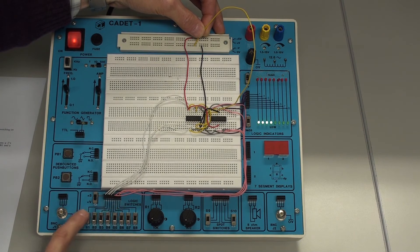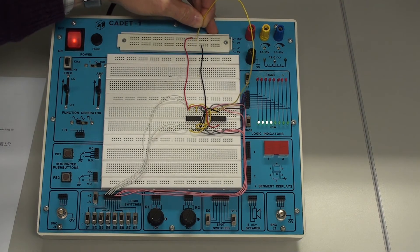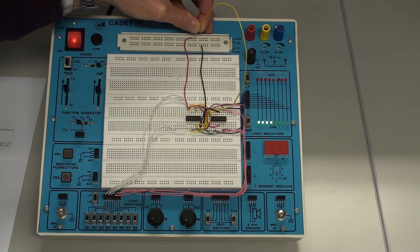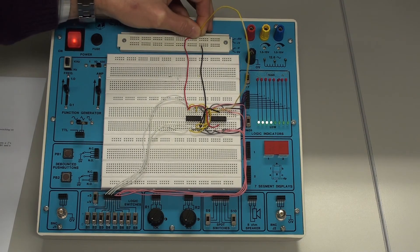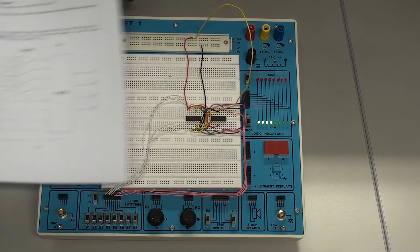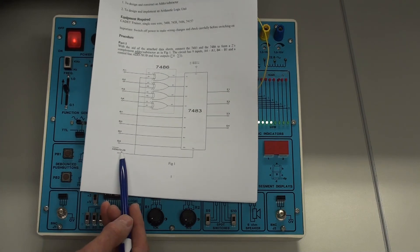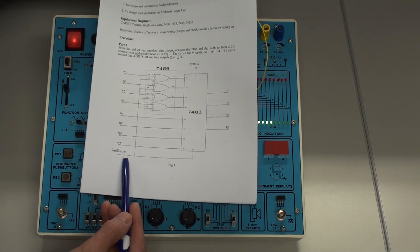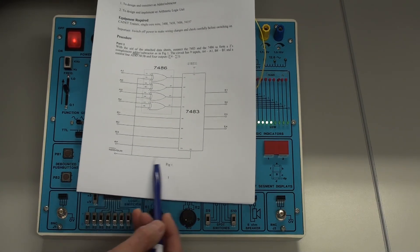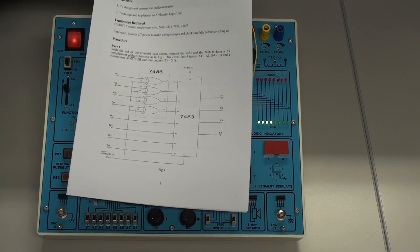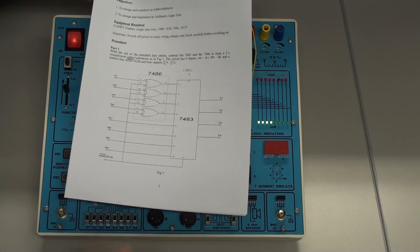We can set all switches back to zero. And now if we change the control to high. And if we go back to the circuit diagram, we can see that when it's high, when the control line is high, we're going to be subtracting A from B.